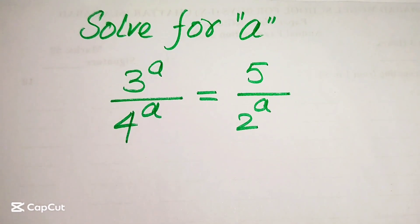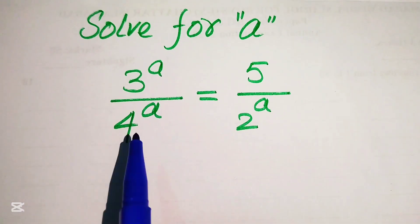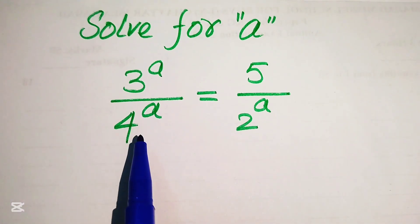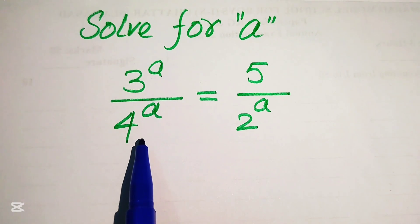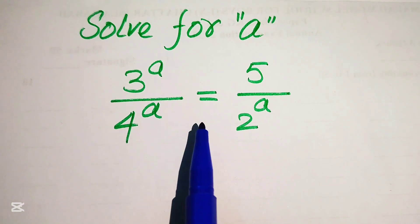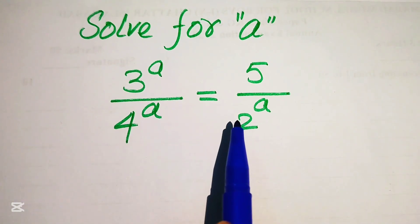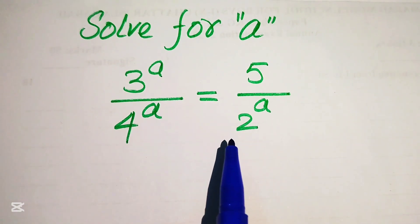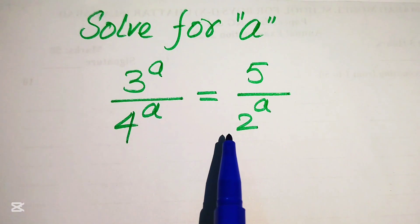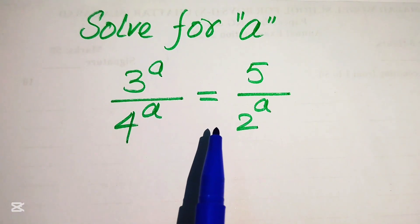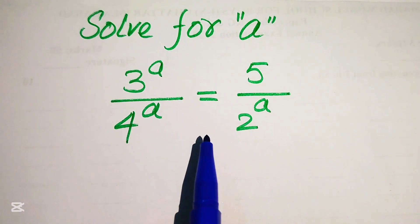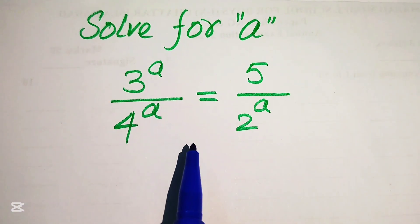Hello everyone, welcome to solve this nice math long period algebra problem. Here we have 3 to the power of a divided by 4 to the power of a equals to 5 over 2 to the power of a, and we solve this problem for the values of a.